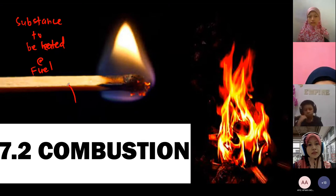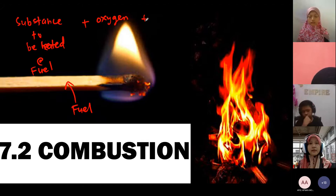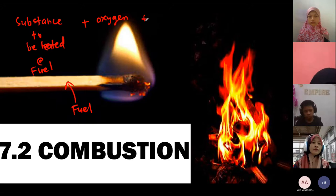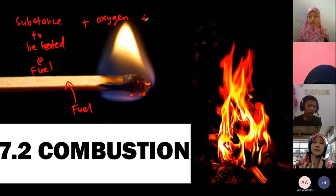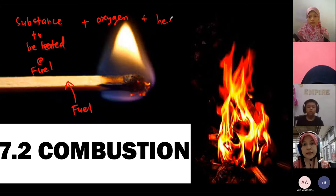So this matchstick is our fuel. And then, when it reacts with the presence of oxygen in air — so kita tahu composition of air, kita dah belajar in subtopik 7.1, there is oxygen in our atmosphere. Oxygen tu, dia punya properties, dia support combustion. Boleh berlaku kebakaran, boleh terbakar. Ada je oxygen, ada je fuels. And also, satu lagi, dia kena ada heat.